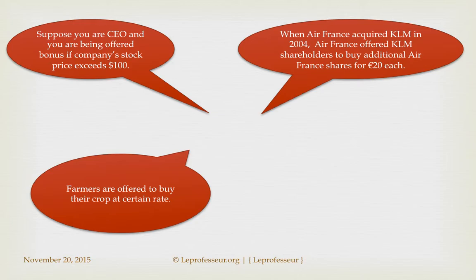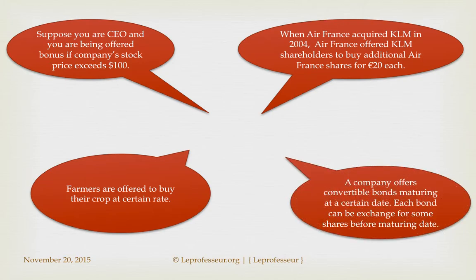Let's say you own a farm, and an industrialist offers you a deal to buy your crop this year or next year at a certain rate. Another example: a company may offer convertible bonds — a financing instrument — which are supposed to mature at a certain date. Each bond can be exchanged for some shares at a fixed price before the maturity date. All four of these examples have something in common.